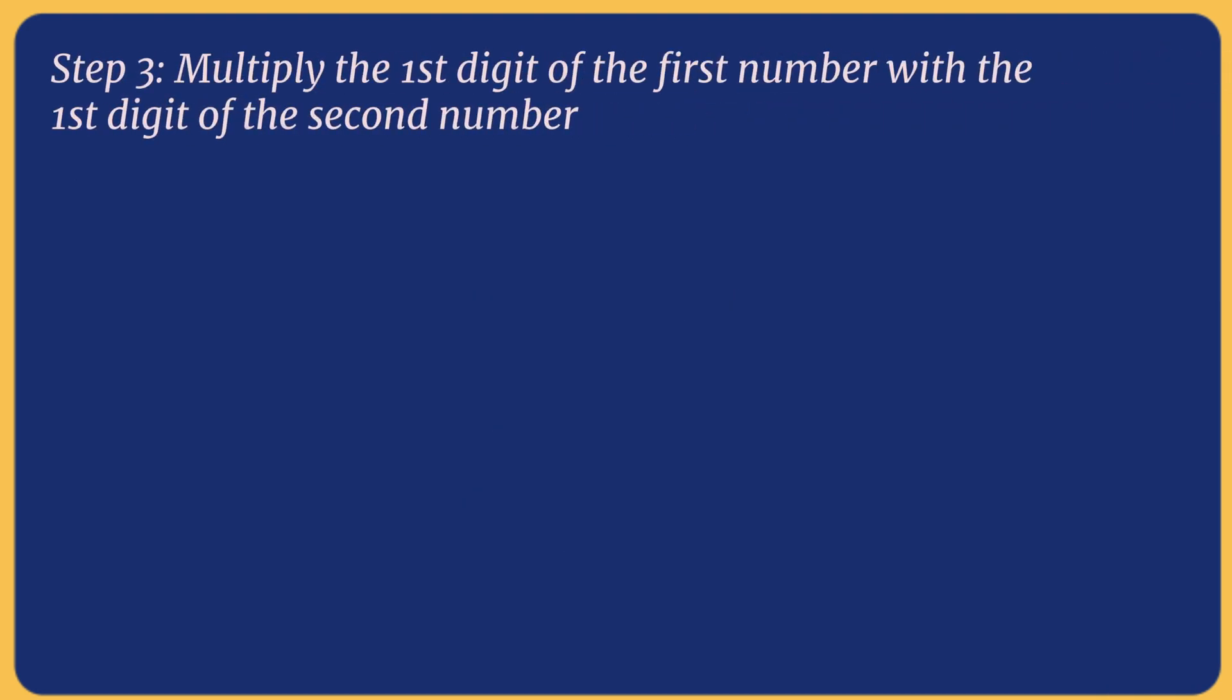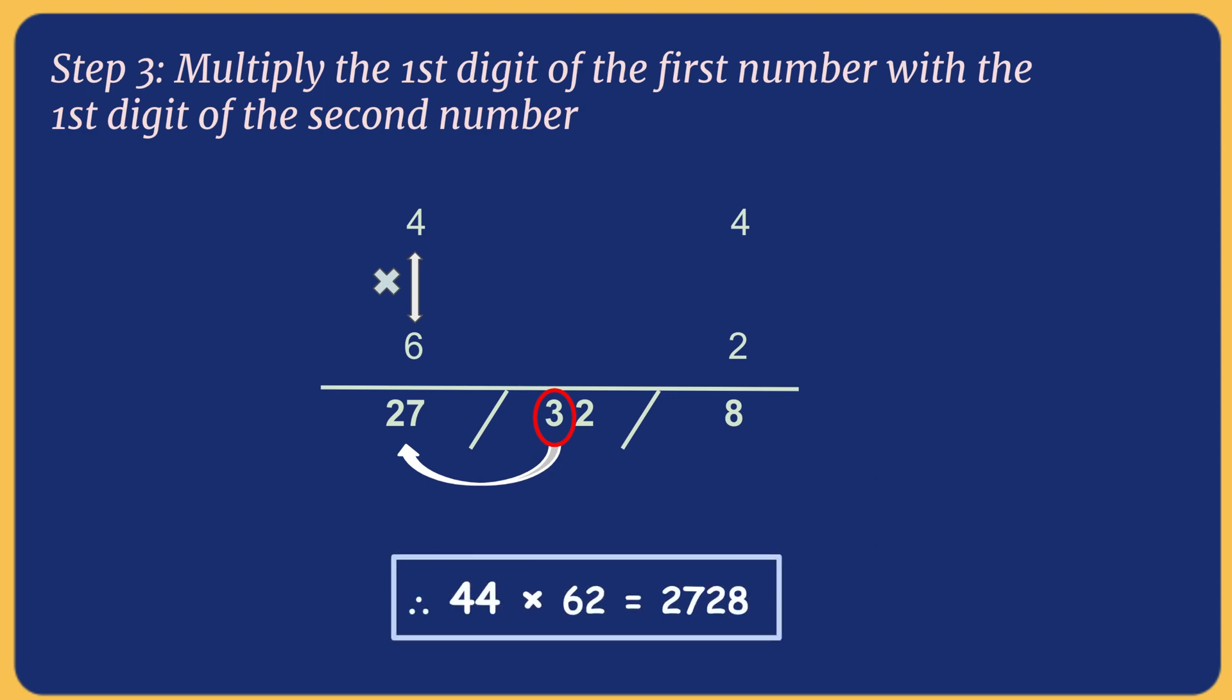Now we'll multiply the starting digits of both the numbers. So, multiplying 4 and 6 will give us 24. Since we can accommodate only one digit in the tenth place, the 3 in the 32 will be added to 24 as a carryover. Therefore, 24 plus 3 will become 27. Hence, combining all the three terms, we get 2728 as the final answer.